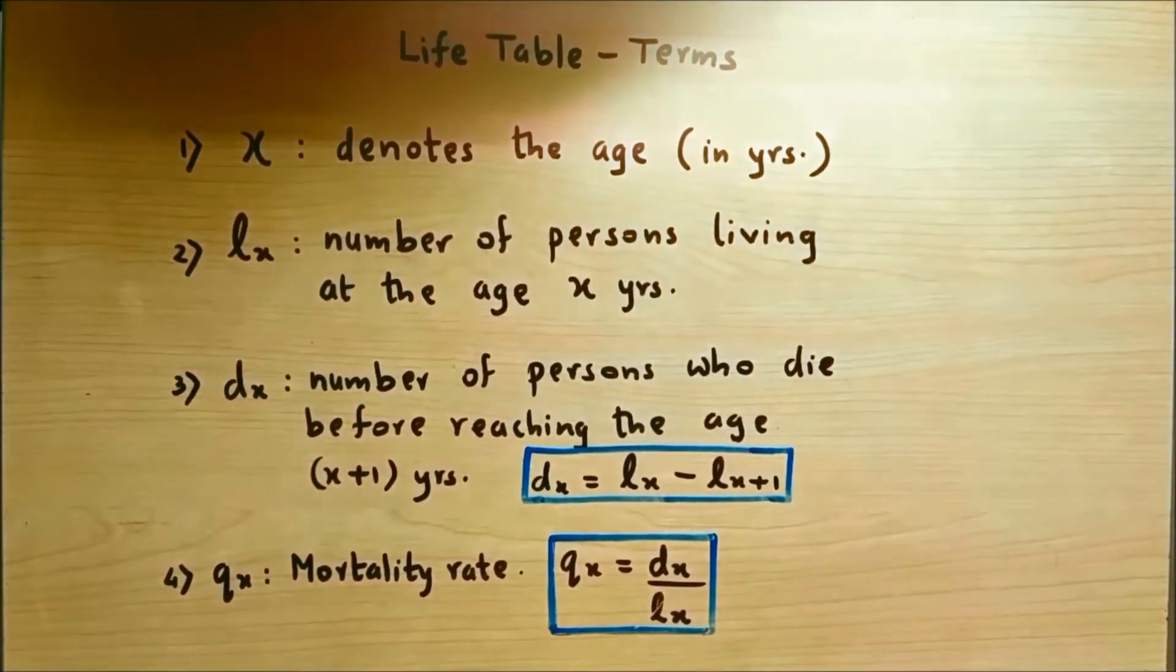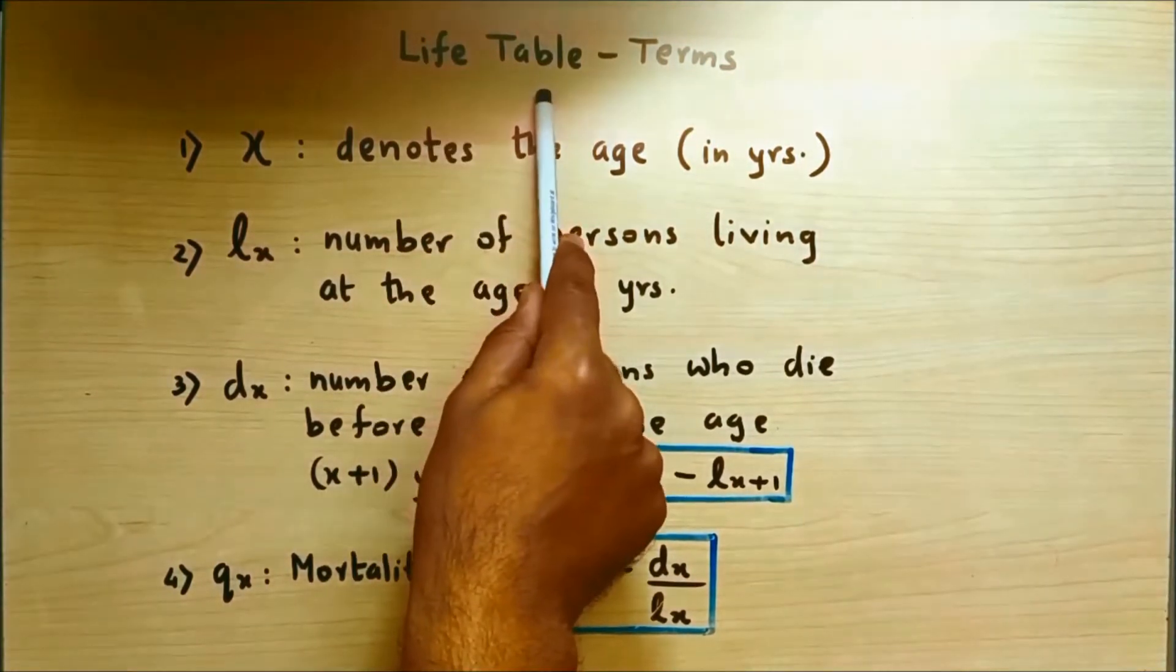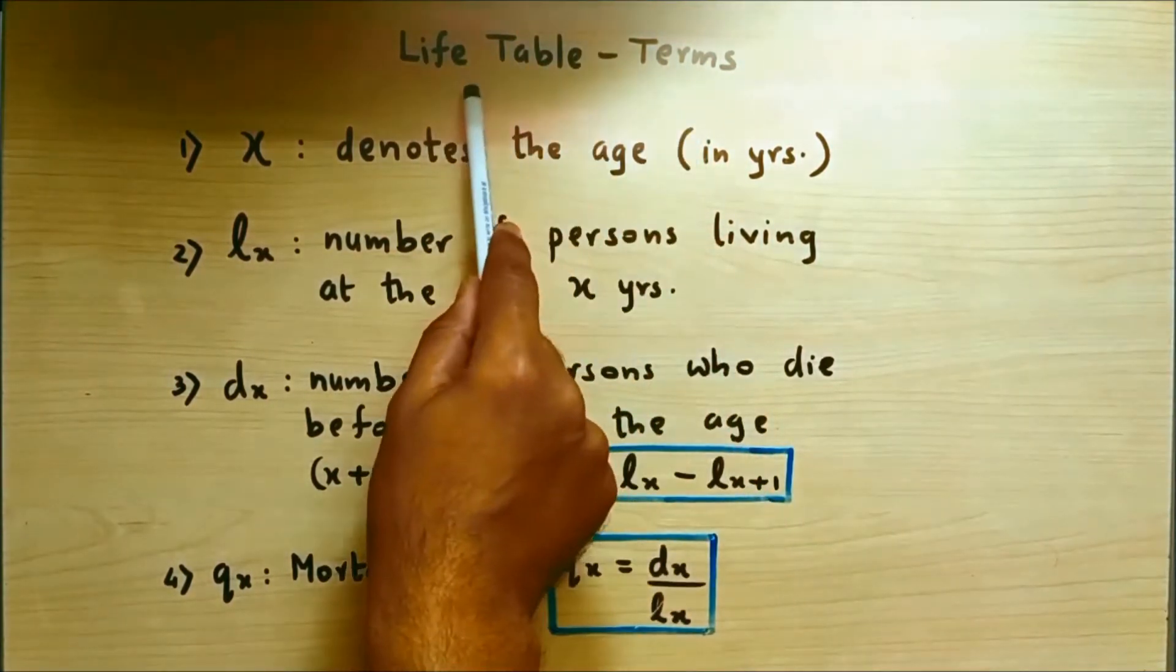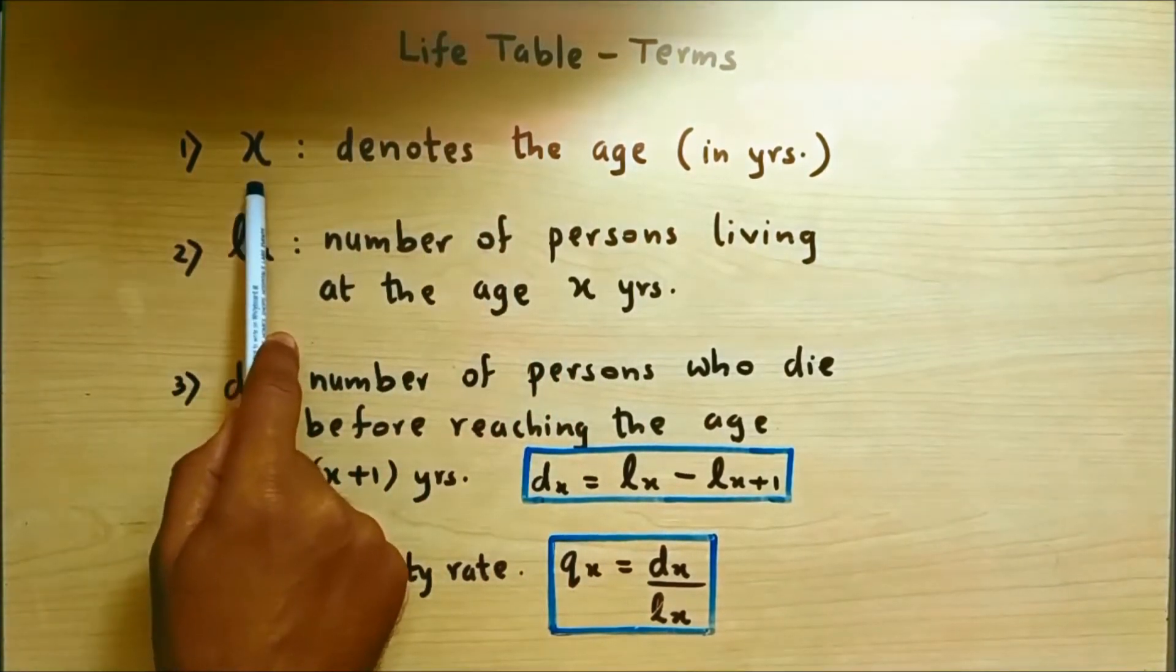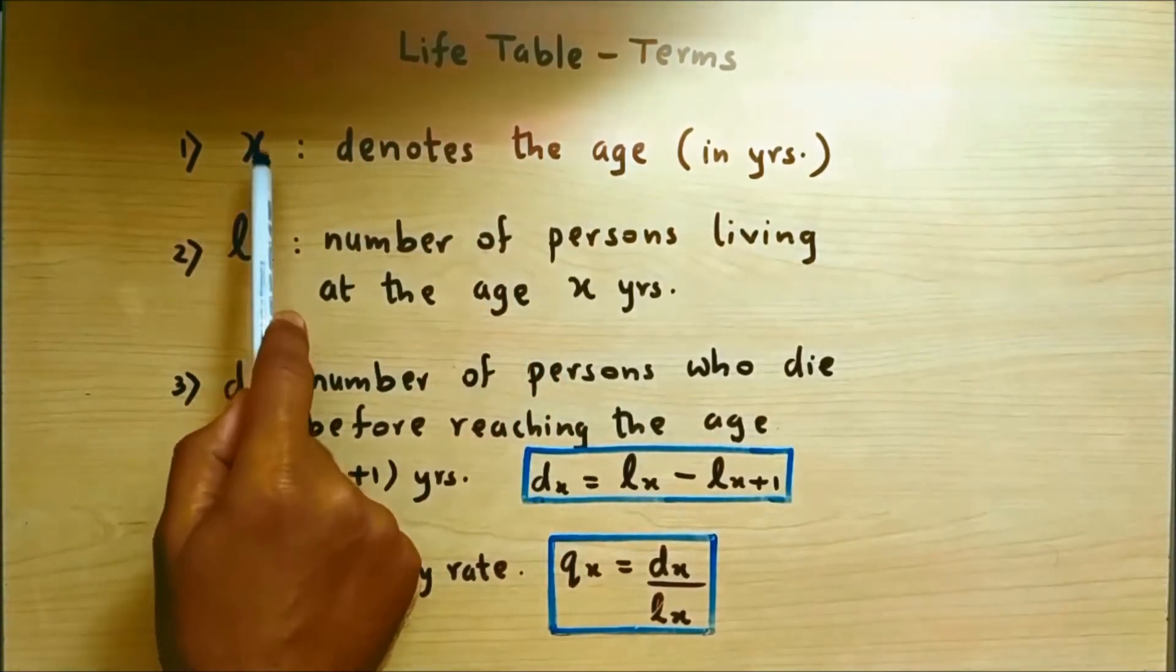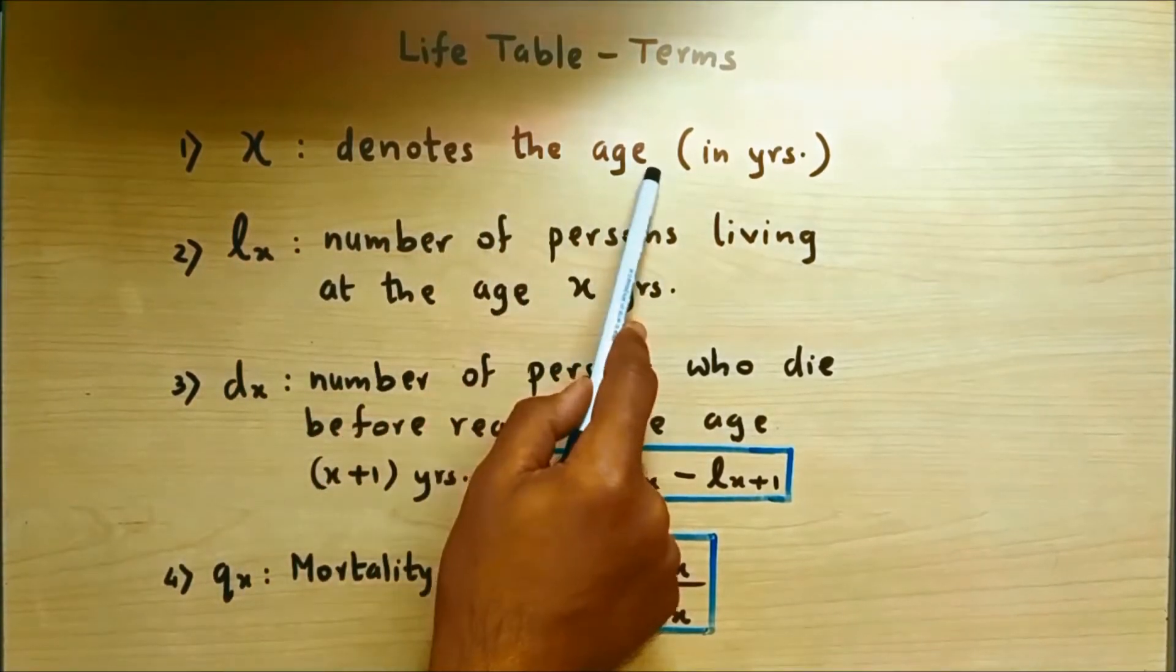Hello friends, today we'll discuss the various terms related to a life table. Let's get started. The first column in the life table is X. Now X denotes the ages in years.